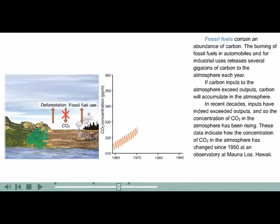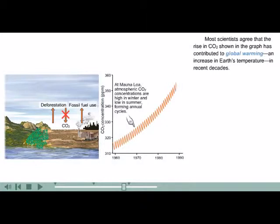These data indicate how the concentration of carbon dioxide in the atmosphere has changed since 1950 at an observatory at Mauna Loa, Hawaii. Most scientists agree that the rise in carbon dioxide shown in the graph has contributed to global warming, an increase in Earth's temperature in recent decades.